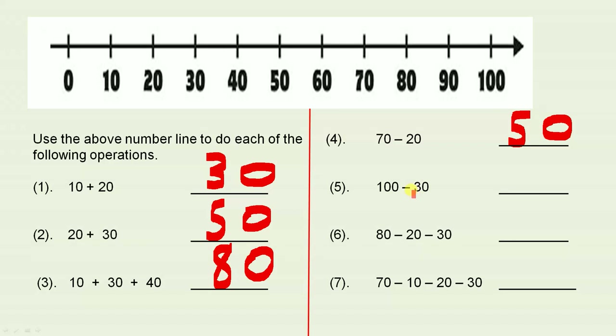One hundred minus thirty. Put your pencil on the hundred, count by tens: ten, twenty, thirty. The answer is seventy.